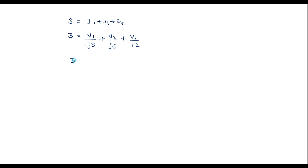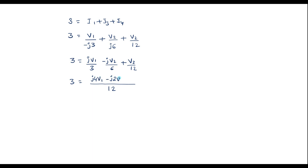Simplifying: 3 equals jV1 divided by 3 plus minus jV2 divided by 6 plus V2 divided by 12. Taking 12 as the LCM gives: 36 equals j4·V1 plus V2(1 minus j2). We call this Equation 2.